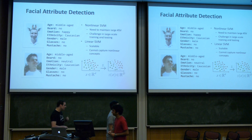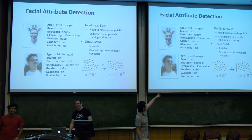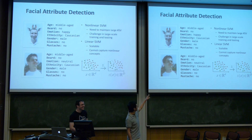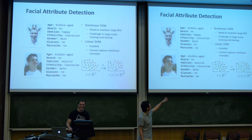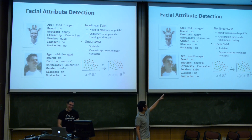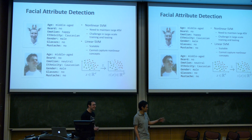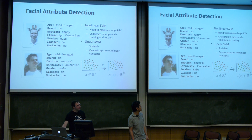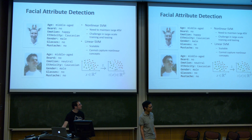Our second problem is facial attribute detection: given an image, we want to detect facial attributes. The second approach for doing this is a non-linear SVM. However, non-linear SVMs need to maintain a large number of support vectors and are expensive to train and test on large-scale datasets. As an alternative you can use a linear SVM, which is scalable but fails to capture non-linear concepts.